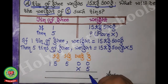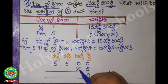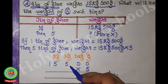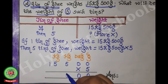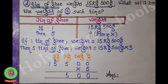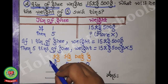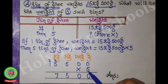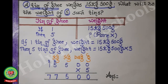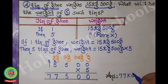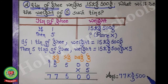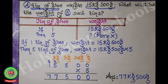Let's do the multiplication: 5 × 0 = 0, 5 × 0 = 0, 5 × 5 = 25, write 5 carry 2, 5 × 5 = 25 plus 2 = 27, write 7 carry 2, 5 × 1 = 5 plus 2 = 7. The answer is 77 kg and 500 grams.